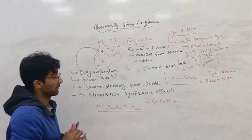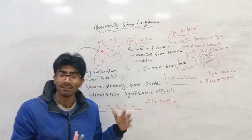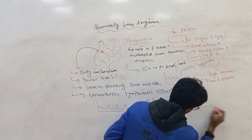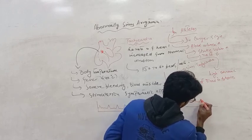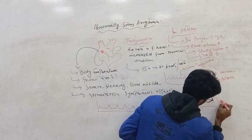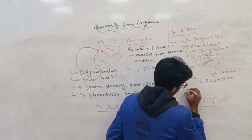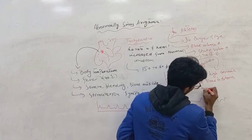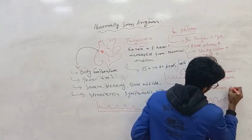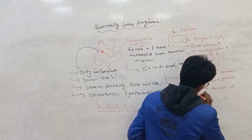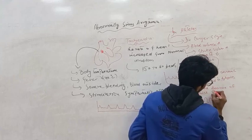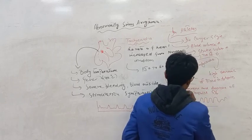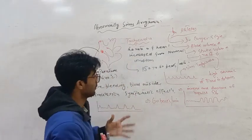So this condition — I hope you understand — during sinus arrhythmia, mostly there is an increase and decrease of impulse of 5%. This is an important point and I hope you understand this.